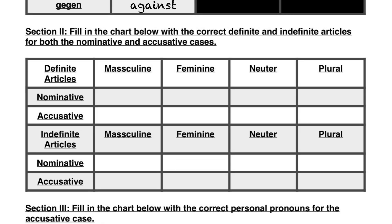I thought I'd do a little review of the der words and the ein words. I put them all into one chart here. So we have der, die, das, die — and then den, die, das, die. There are your der words for the nominative and accusative cases. Since this is about the accusative case, you can expect to see a lot more of the den, die, das, die category.